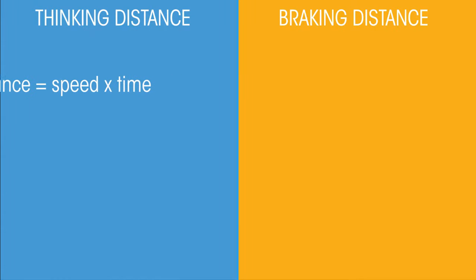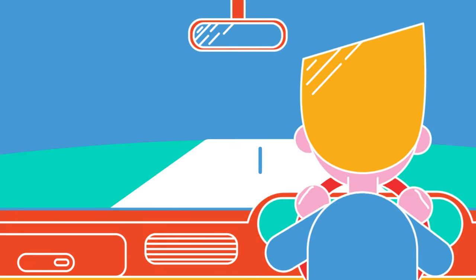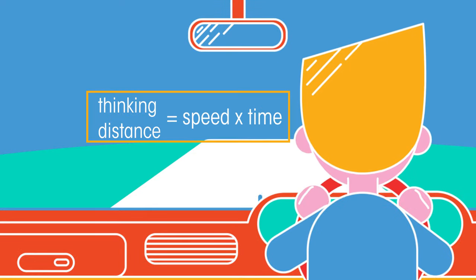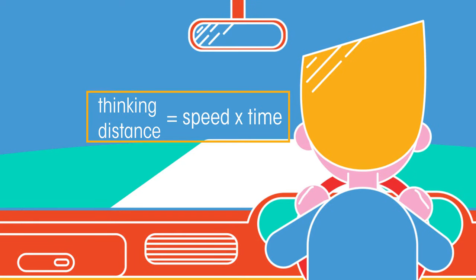Since distance equals speed by time, thinking distance is the time that it takes for the driver to react multiplied by the speed the vehicle is moving at.